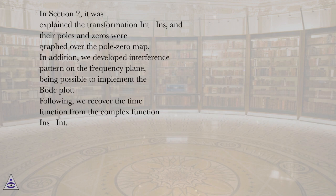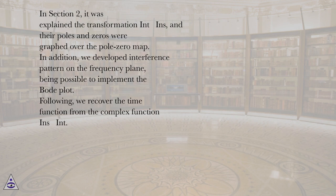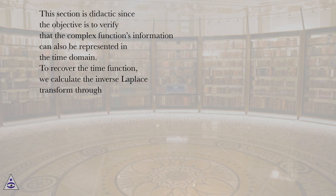In section 2, the transformation was explained and their poles and zeros were graphed over the pole-zero map. In addition, we developed the interference pattern on the frequency plane, making it possible to implement the plot. Following this, we recover the time function from the complex function. This section is didactic since the objective is to verify that the complex function's information can also be represented in the time domain.